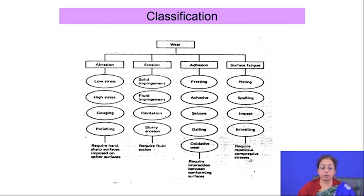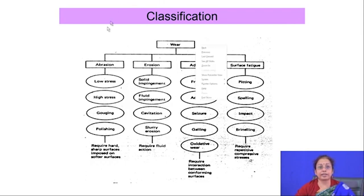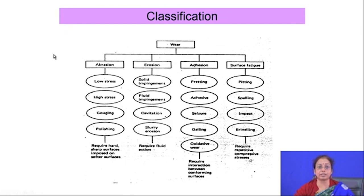Wear modes in summary can be divided into four different categories: abrasive wear, adhesive wear, erosive wear, and surface fatigue. These are four different categories or modes by which the wear process proceeds. Each category has its own characteristics and several sub-categories as well.